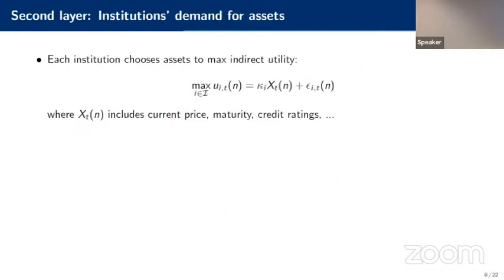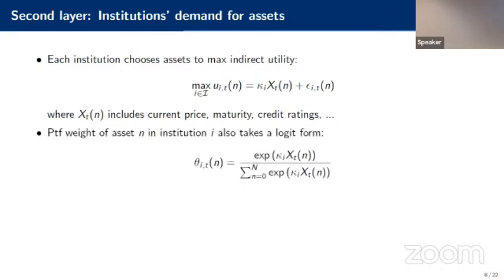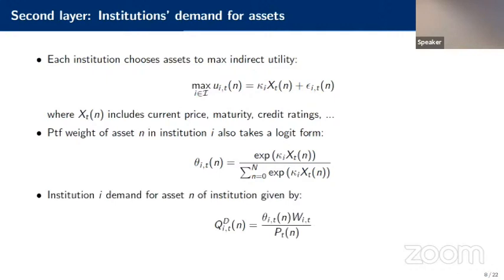The second layer determines how funds make their portfolio decisions. Institutions choose assets to maximize their indirect utility based on characteristics of the assets, including price and other non-price characteristics. This again gives a closed-form expression for the weight each asset has in each institution's portfolio, which then aggregates into the total bonds each institution demands based on fund wealth and asset price.